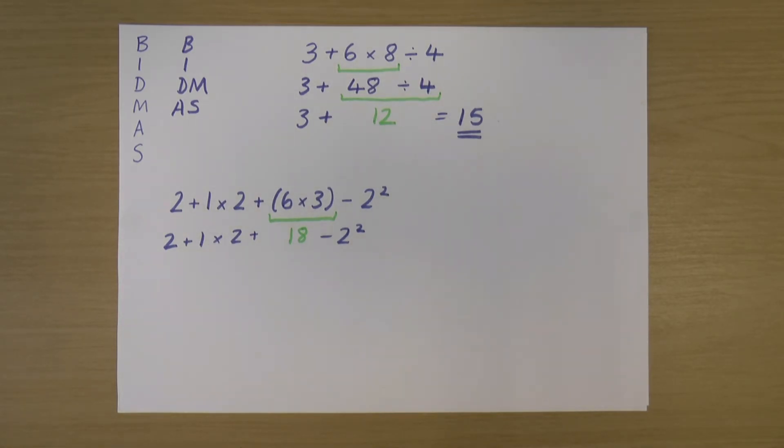Okay. So let's have a look at BIDMAS again. Brackets—do I have any brackets? No, I no longer have any brackets. I just did the brackets bit. Do I have any indices? Well, yes, I do. I've got 2² there. So I am going to do that first. So 2² means 2 × 2, which is 4. And then I'm going to write out the rest of the sum, as I have before.